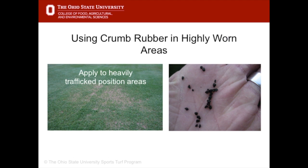Some field managers have applied recycled crumb rubber to high traffic areas to protect the crown of the grass plant and to try to prevent loss of ground cover. There is some research to suggest that the crumb rubber does improve wear tolerance in high traffic areas, but introducing any type of foreign material onto a field must be done with consideration as to what effect that material may have on soil and turf performance. The recommended rate for crumb rubber is no greater than a quarter of an inch depth.